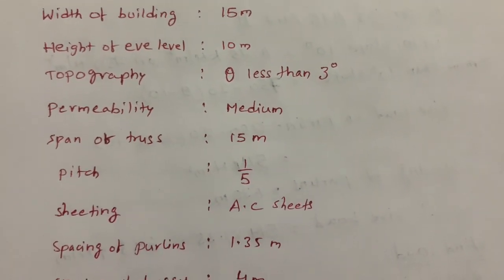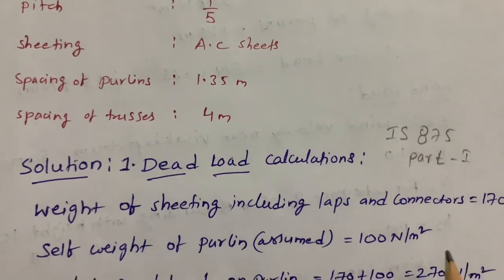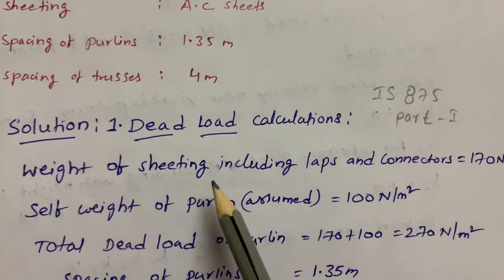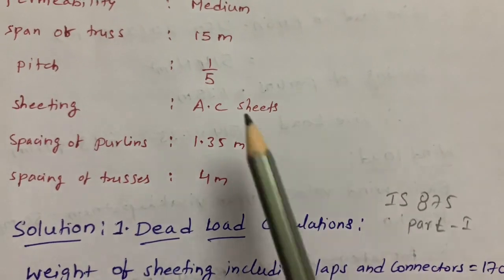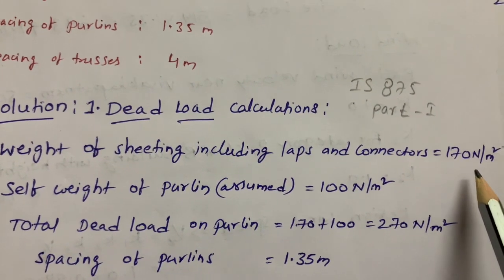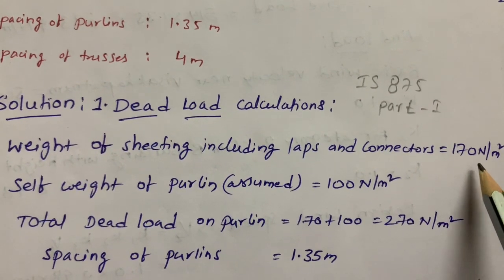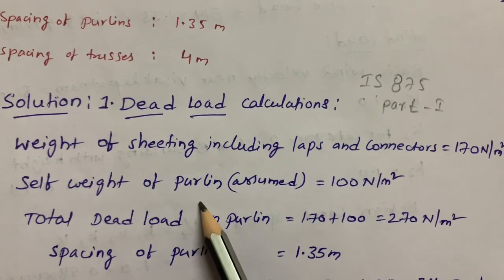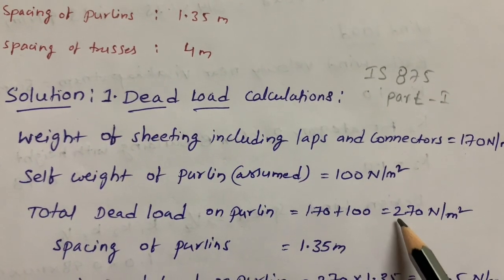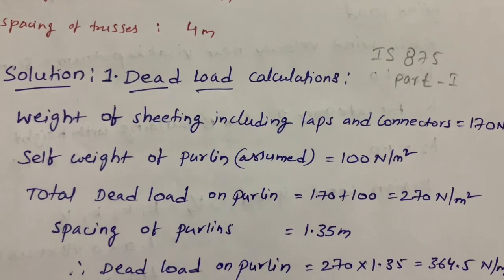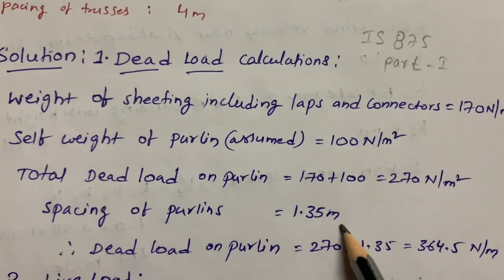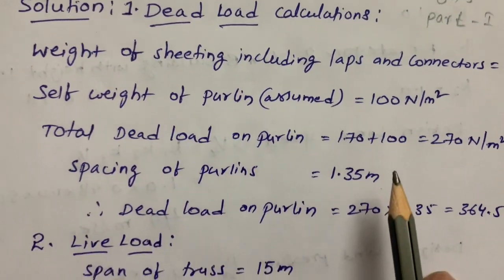In the solution, the first step is dead load calculations as per IS 875 Part 1. The width of sheeting including laps and connectors for AC sheets — that is asbestos cement sheets — the code specifies 170 to 200 Newton per meter square; I am considering 170. Self-weight of the purlin is assumed as 100 Newton per meter square. Total dead load on the purlin is 170 plus 100 equals 270. Spacing of the purlins is 1.35 meters, so dead load on the purlin is 270 × 1.35 = 364.5 Newton per meter.